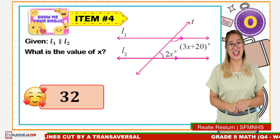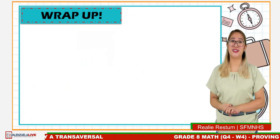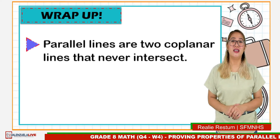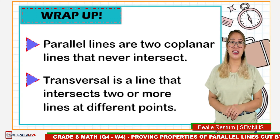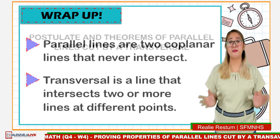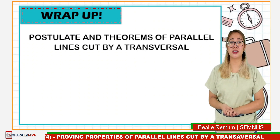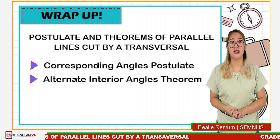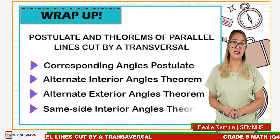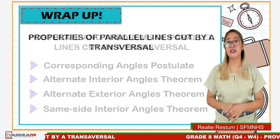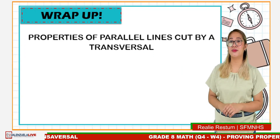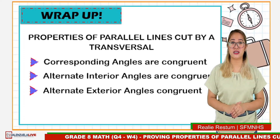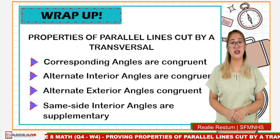You were able to answer all the questions correctly — excellent job, grade 8 students! To summarize our lesson: parallel lines are two co-planar lines that never intersect, and a transversal is a line that intersects two or more lines at different or distinct points. The postulate and theorems of parallel lines cut by a transversal are: the Corresponding Angles Postulate, the Alternate Interior Angles Theorem, the Alternate Exterior Angles Theorem, and the Same Side Interior Angles Theorem. The properties of parallel lines cut by a transversal are: corresponding angles are congruent, alternate interior angles are congruent, alternate exterior angles are congruent, and same side interior angles are supplementary.